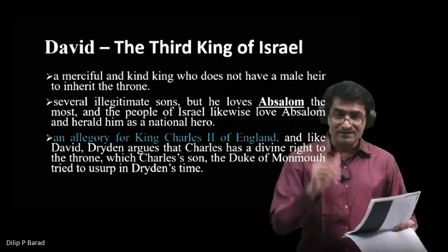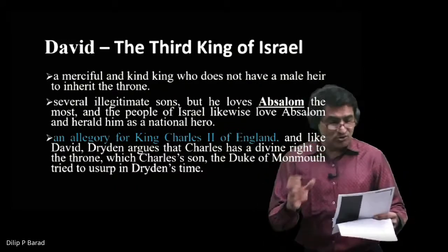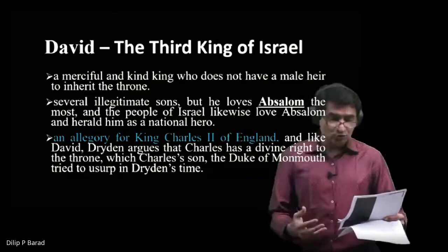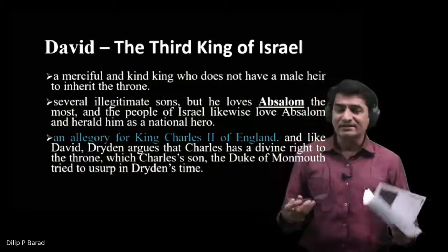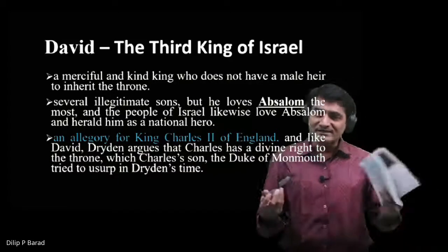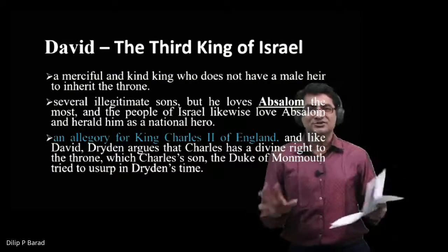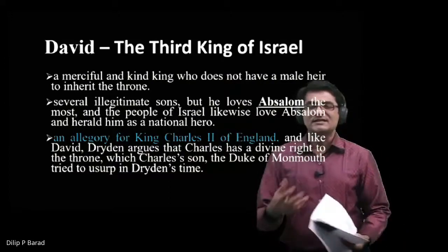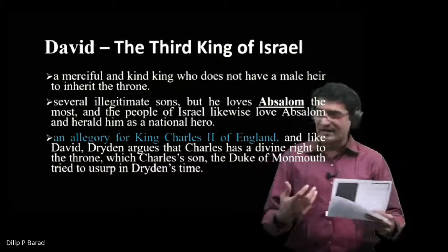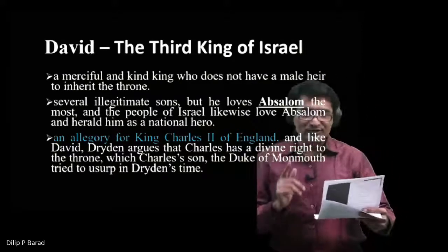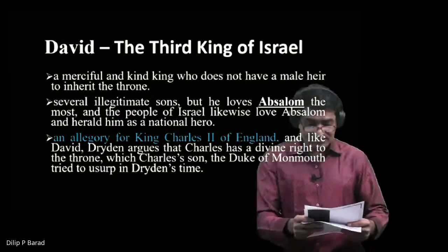David is a merciful and kind king who does not have a male heir to inherit the throne — almost parallel to conditions seen in various monarchies, like Henry the Eighth who had no male child, so Elizabeth became Queen of England. The crown will therefore descend down a collateral line after David's death to his brother.